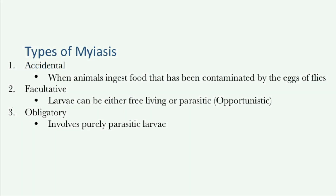There are three main types of myiasis: accidental, facultative, and obligatory. Accidental myiasis refers to when animals ingest food that has been contaminated by the eggs or flies. Although the fly species is typically non-parasitic, it can be in order to survive.